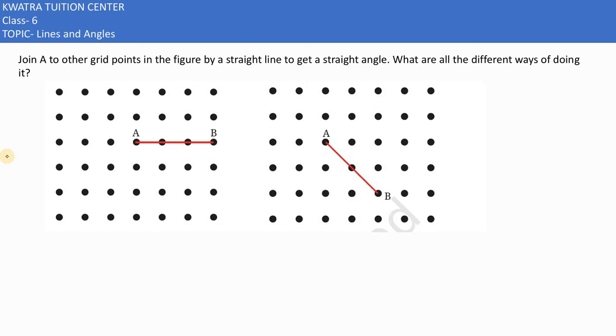Let's have a look at the other question. It says join A to other grid points in the figure by a straight line to get a straight angle.